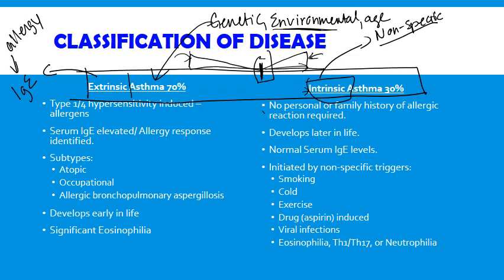These terms — extrinsic and intrinsic — are provided not because you'll commonly use them clinically, but because you might see them in the literature, and they provide structure to learn the pathways that mediate the immunopathogenesis and treatment of asthma.